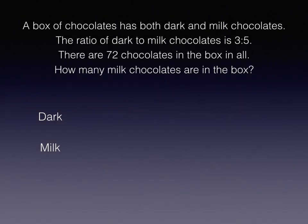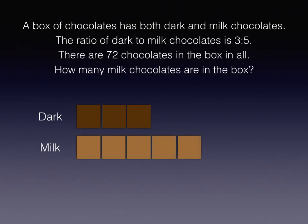Now one last problem. A box of chocolates has both dark and milk chocolates. This time, the ratio of dark to milk chocolates is 3 to 5. So for every 3 dark chocolates, there are 5 milk chocolates. There are 72 chocolates in the box in all. How many milk chocolates are there?